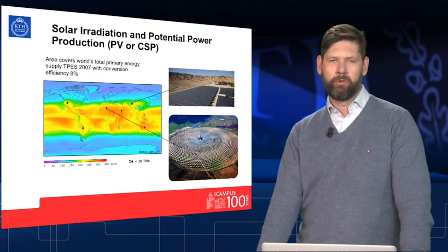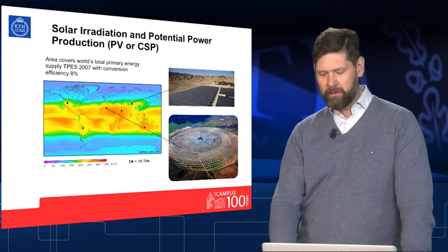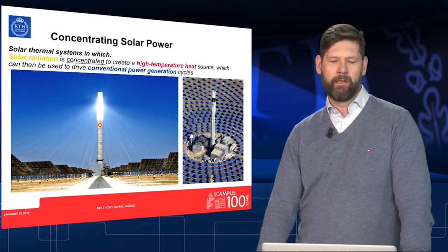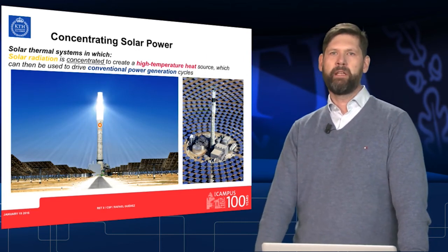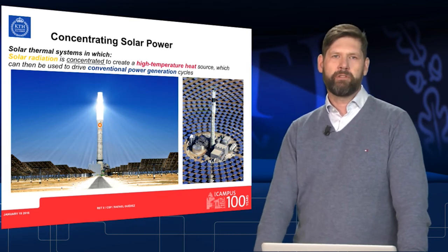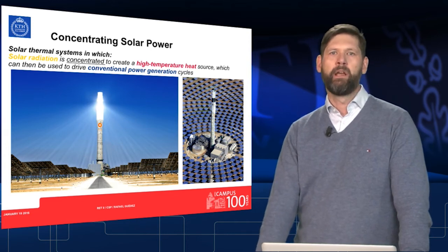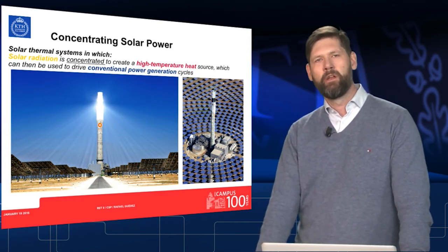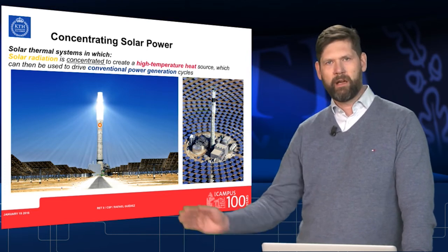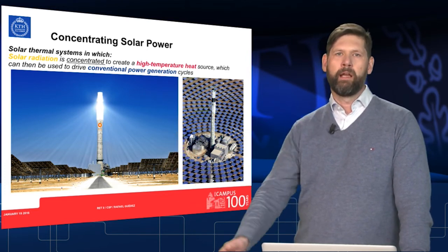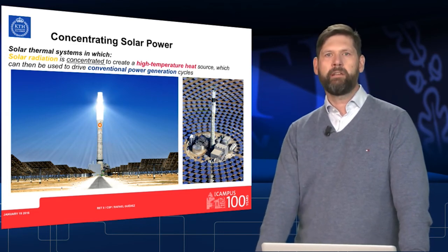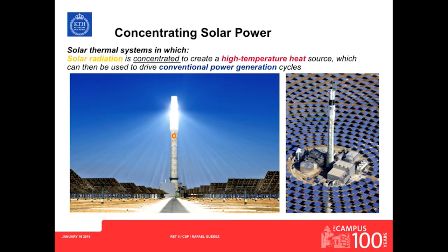It is concentrated solar power plants that is my topic today — how to build them, how to operate them, and how to make them cost efficient in the market. Concentrating solar power differs from PV in that we convert solar energy into heat. We do that by capturing the solar light with a mirror field and concentrating the light to a point. In a tower power plant, the solar light is concentrated at the top of the tower and heats water to produce steam, which drives a steam turbine.